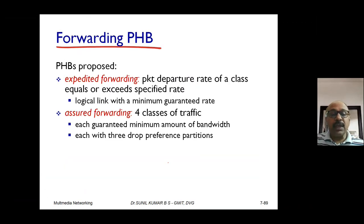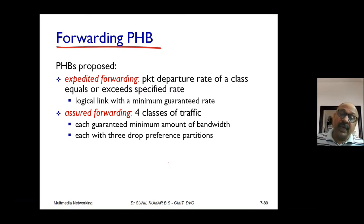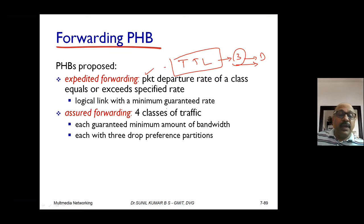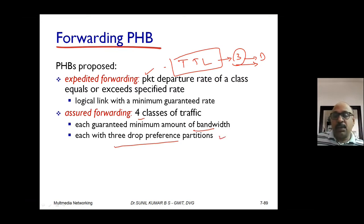Expedited forwarding applies when a packet has already lost its timeout period — forwarding it further would be very difficult, so it is dropped. Related to this is time to live, TTL, in the TCP header. If TTL is set to 3, it means the packet must reach the destination within three more hops, after which it will be discarded. That is expedited forwarding. Assured forwarding guarantees a minimum amount of bandwidth, with drop preferences managed for each partition.